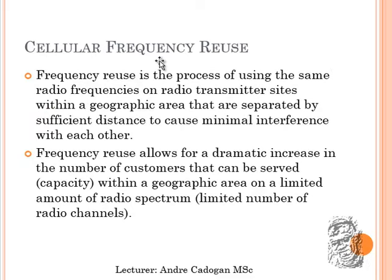Frequency reuse is the process of using the same radio frequency on a radio transmitter site within a geographical area separated by sufficient distance. As discussed with the red, green, and blue color coding, there must be some differences between each one of those frequencies to cause minimum interference. Frequency reuse allows for a dramatic increase in the number of customers that can be served within a geographic area.